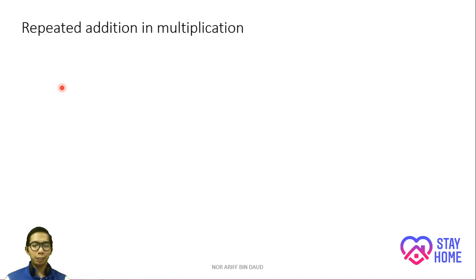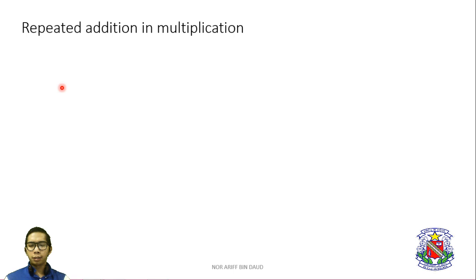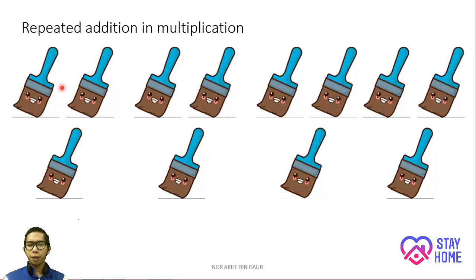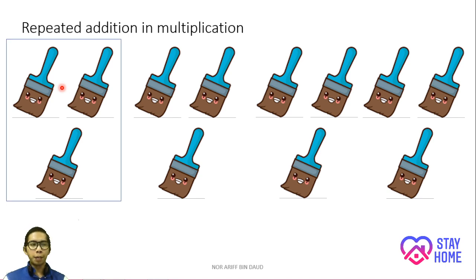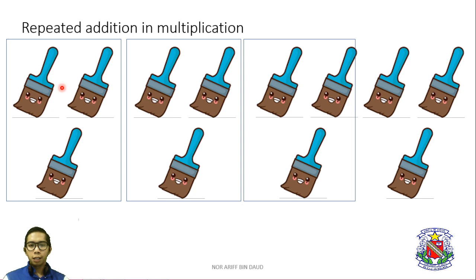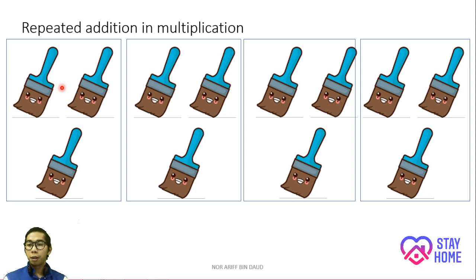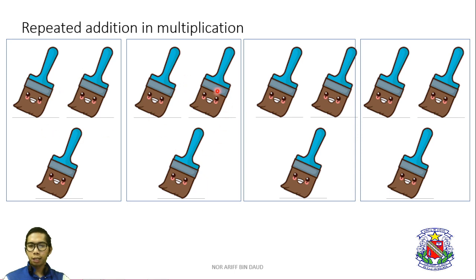Repeated addition in multiplication. Now let me explain what is repeated addition in multiplication. For the basic one, I'll still use a picture to make you understand better. So I have paintbrushes here. Let's put the paintbrushes in groups: 1 group of paintbrush, 2 group of paintbrush, 3 group, and 4 groups of paintbrush. So how many paintbrushes in one group? We have 3 paintbrushes in each group, and I have 4 groups of paintbrushes here.